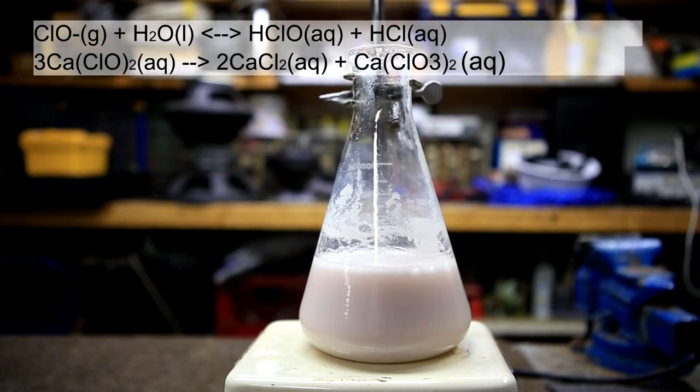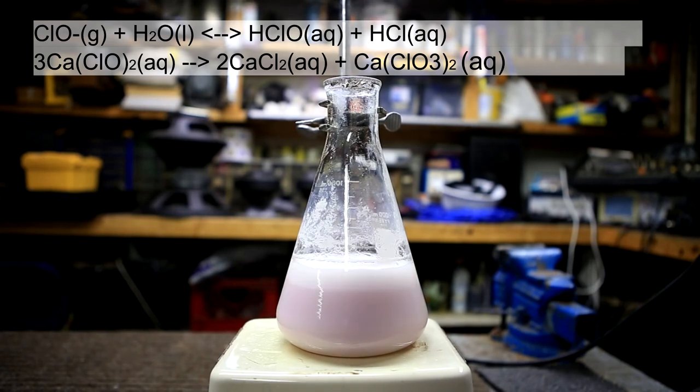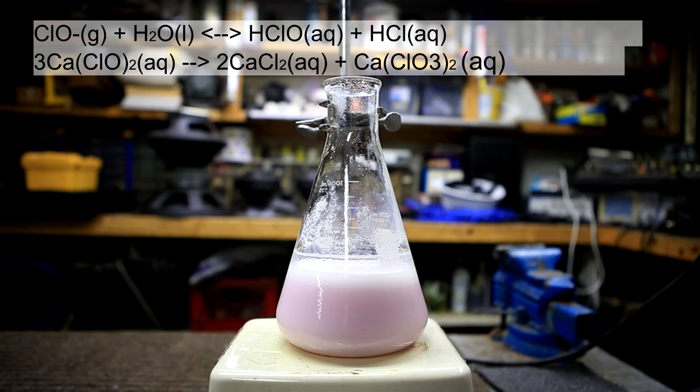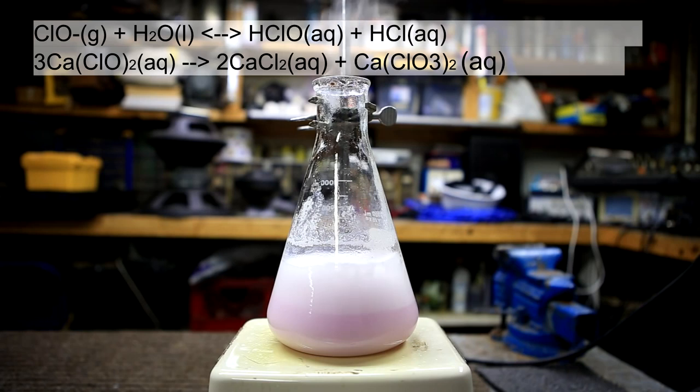The reaction occurring is a disproportionation reaction. Calcium hypochlorite dissolves in water and the hypochlorite ion reacts with water to produce hypochlorous acid and hydrochloric acid. Then in the presence of heat and hypochlorous acid the calcium hypochlorite disproportionates to calcium chloride and calcium chlorate.